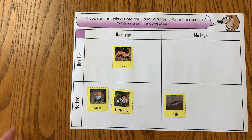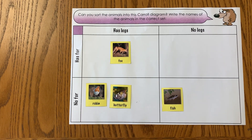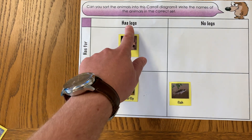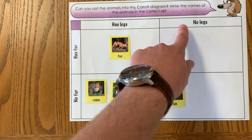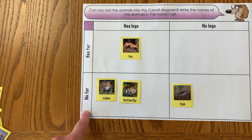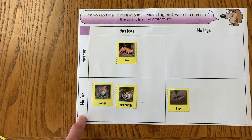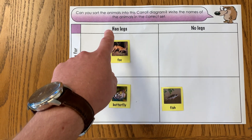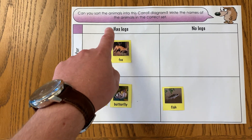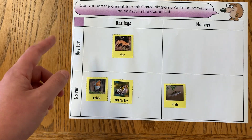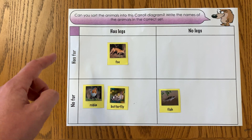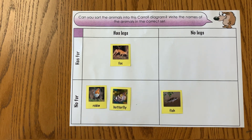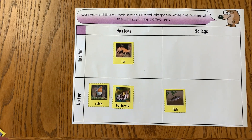There are loads more pictures on the sheet that I could have a go at. Now it's up to you — you can try and make your own Carroll diagram with these same categories, or perhaps you can have a go at some different ones. You could do has fins, no fins, or scales, no scales, for example. But give it a go and see how you get on.